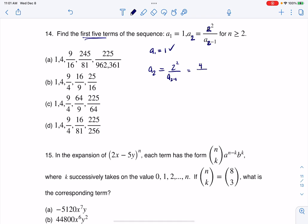So I'm going to have a 4 in the numerator, and then if I look at that subscript, 2 minus 1 is 1. So I'll have a sub 1, which we knew we were given it was 1. So a sub 2 is 4.